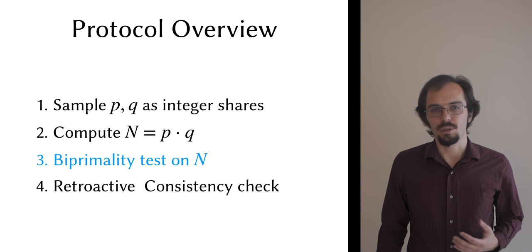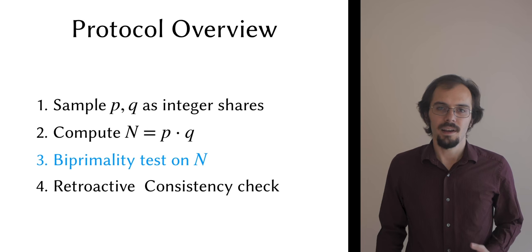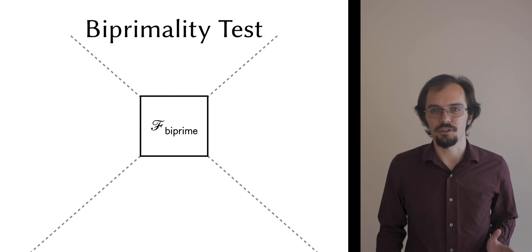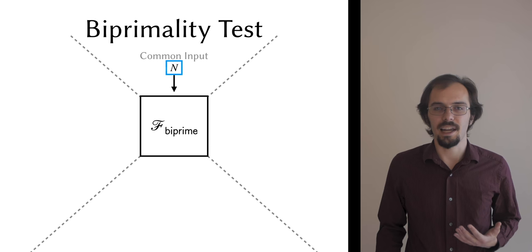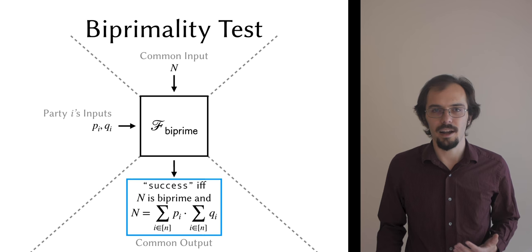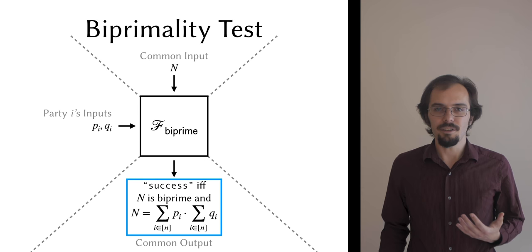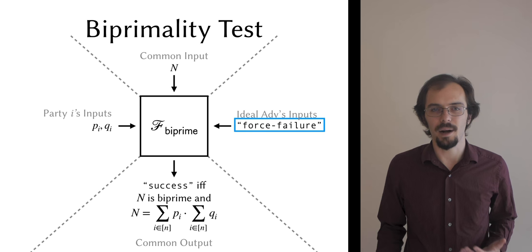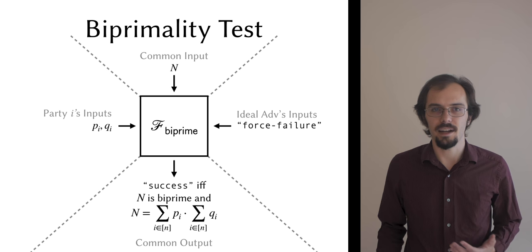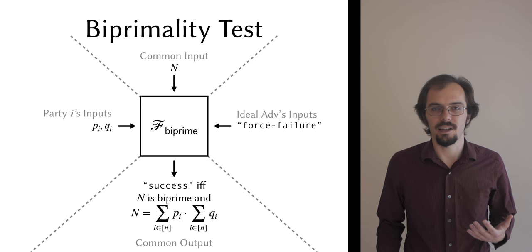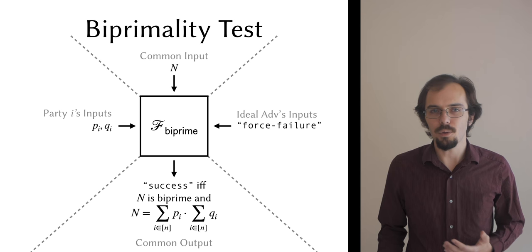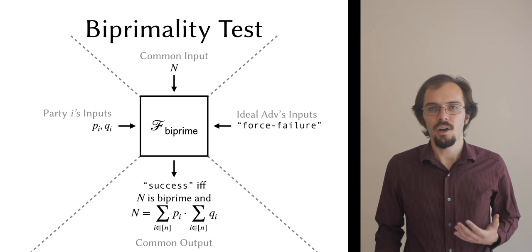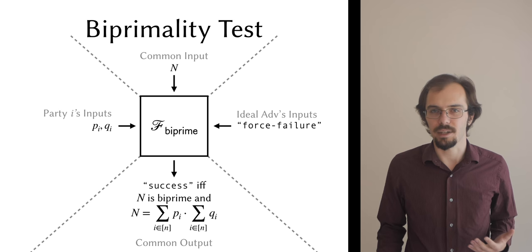I'm only going to talk briefly about the biprimality test, since our protocol follows mostly from prior work. The interesting thing is that we prove it realizes a standalone functionality. Here I have a simplified version of it. It takes the candidate biprime n as a common input and integer shares of the candidate factors p and q from each party, and it outputs success only if both n is a biprime and n really is the product of the input factors. The adversary can also force failures, but it can't force successes, which means that this functionality has no false positives. The functionality is clean and free of protocol artifacts such as authentication primitives, and it allows corrupt parties to use whatever shares they like. Notice however that if n really is a biprime, then there are only two possible pairs of factors p and q that would make the functionality succeed. One follows from the honest protocol execution, and we show that finding the other is as hard as factoring n. This is an important and subtle case that is essential for making our simulation argument go through.